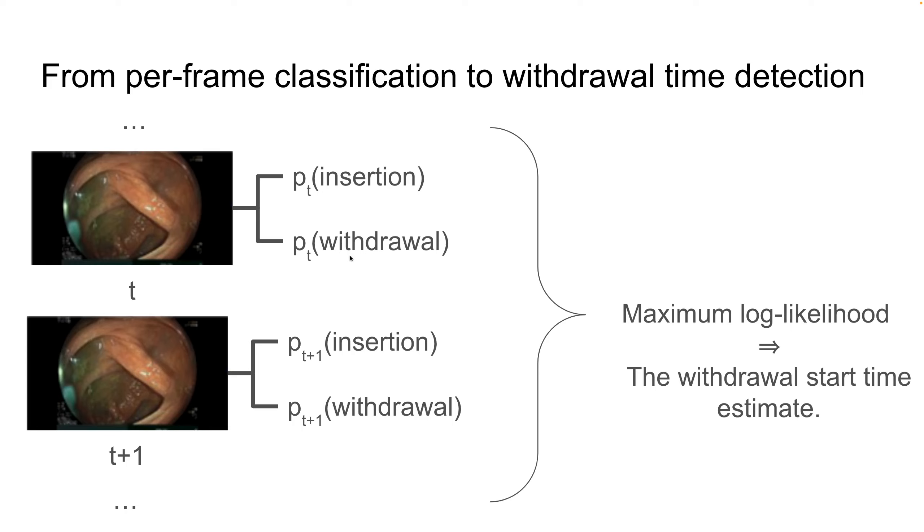Then the per-frame probabilities are injected into a change point detection algorithm, and then the algorithm outputs a single point in time in which we estimate the withdrawal time actually begun.